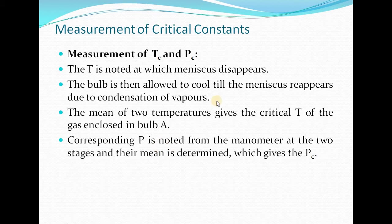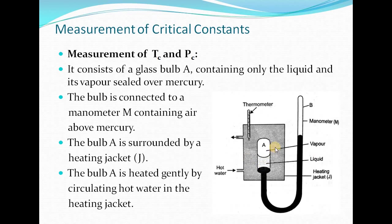The corresponding pressure is noted from the manometer at both stages. When the meniscus disappears, the pressure is noted as P1; when the meniscus reappears, the pressure noted is P2. Taking the mean of P1 and P2 gives us the critical pressure of the gas. So by using this apparatus, we simultaneously measure the critical temperature and critical pressure of a gas.